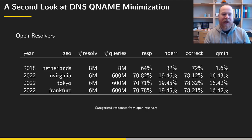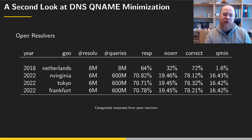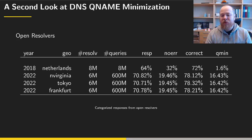Looking at the active measurement results on open resolvers, we performed measurements from three geographical locations: North Virginia, Tokyo, and Frankfurt. We had a list of six million IPv4 addresses responding on port 53 UDP and sent 100 queries per resolver. Of these, 70% responded without timing out, and of those, 20% responded with no error. The remaining 80% responded with refused, not authorized, server fail, and so on — with the majority being refused.